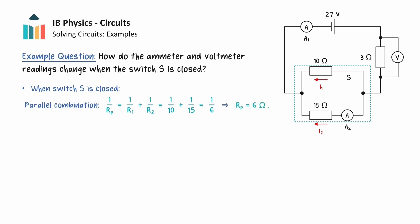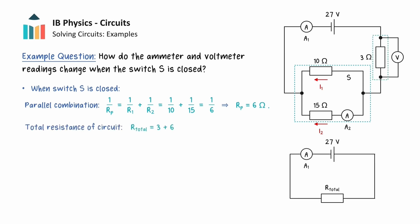This parallel combination of resistors is in series with the 3 ohm resistor, so the total resistance of this circuit will be the sum of these two resistors, giving a value of 9 ohms.